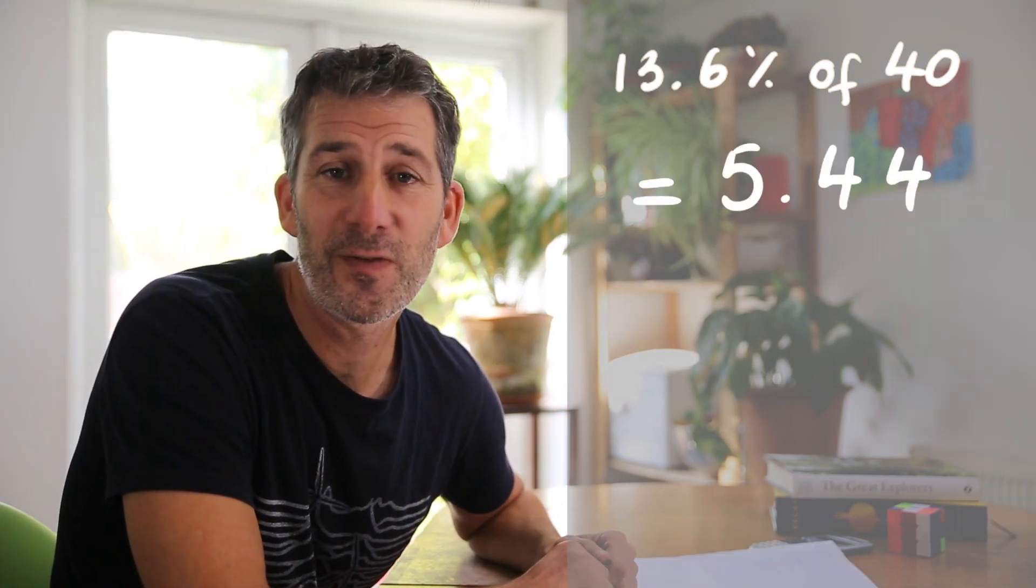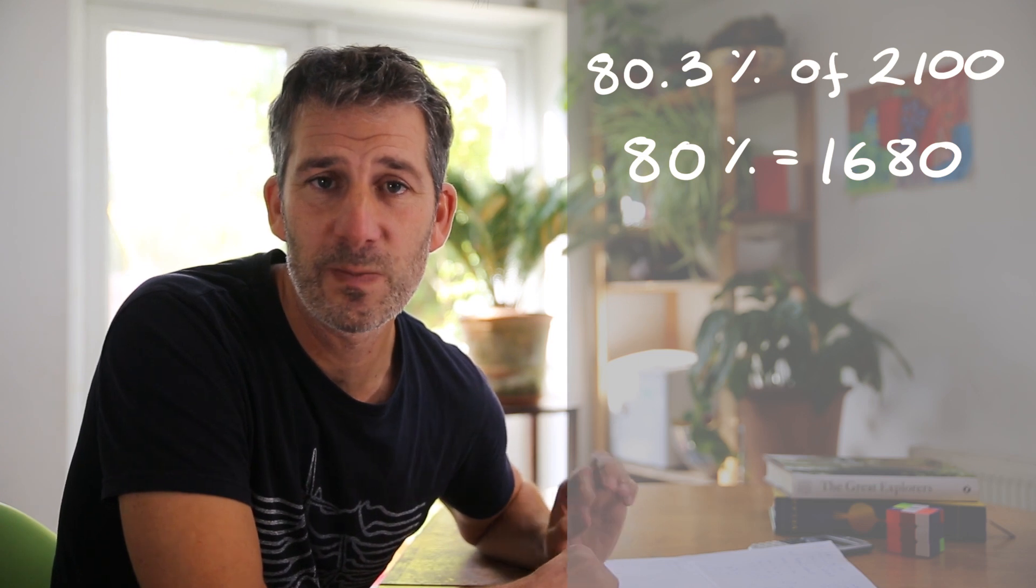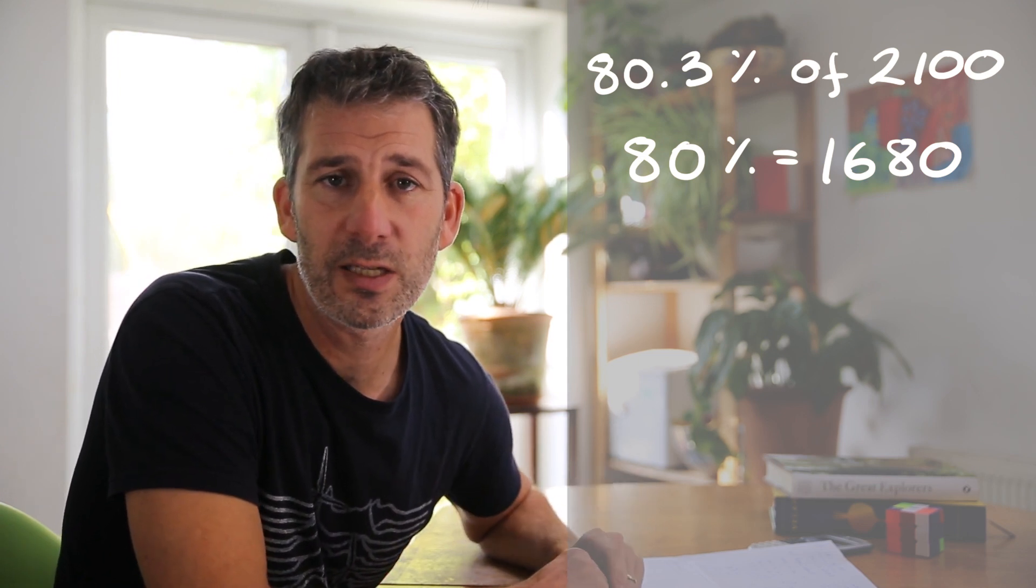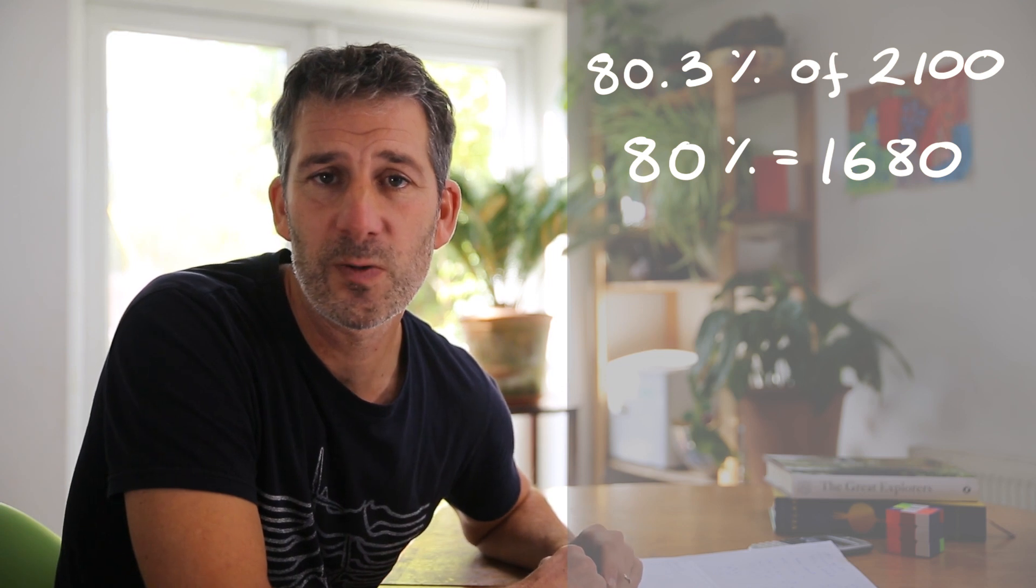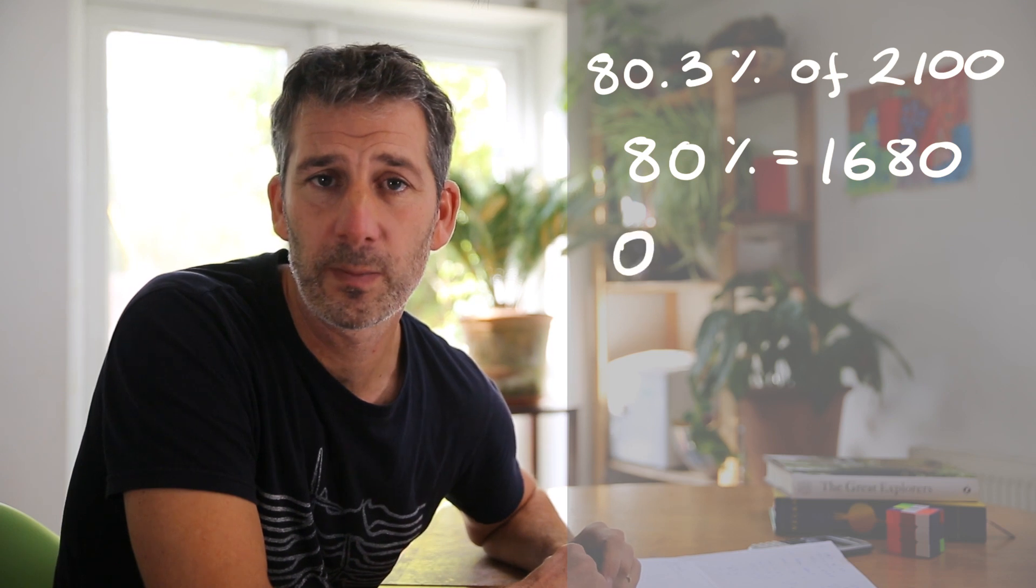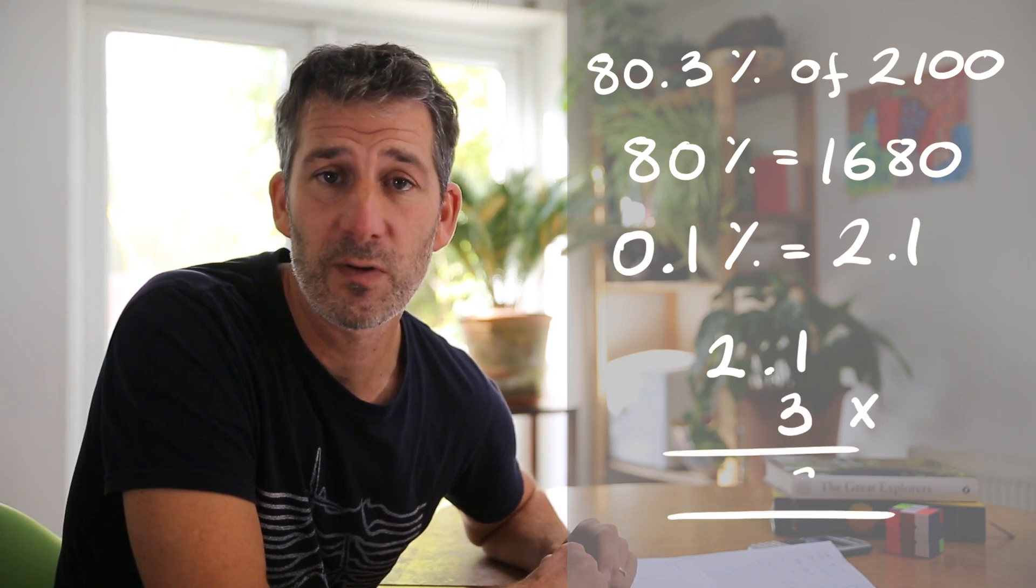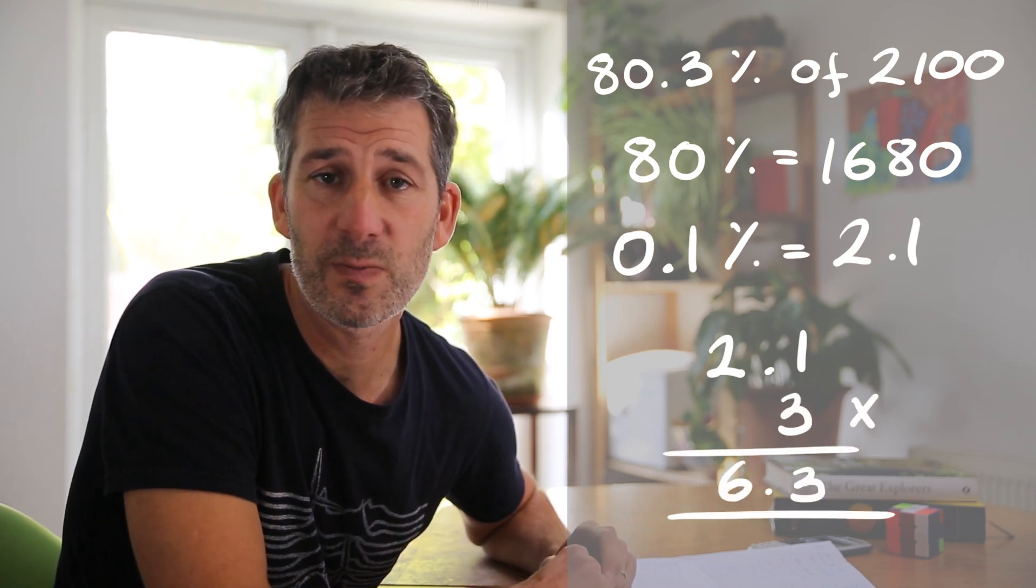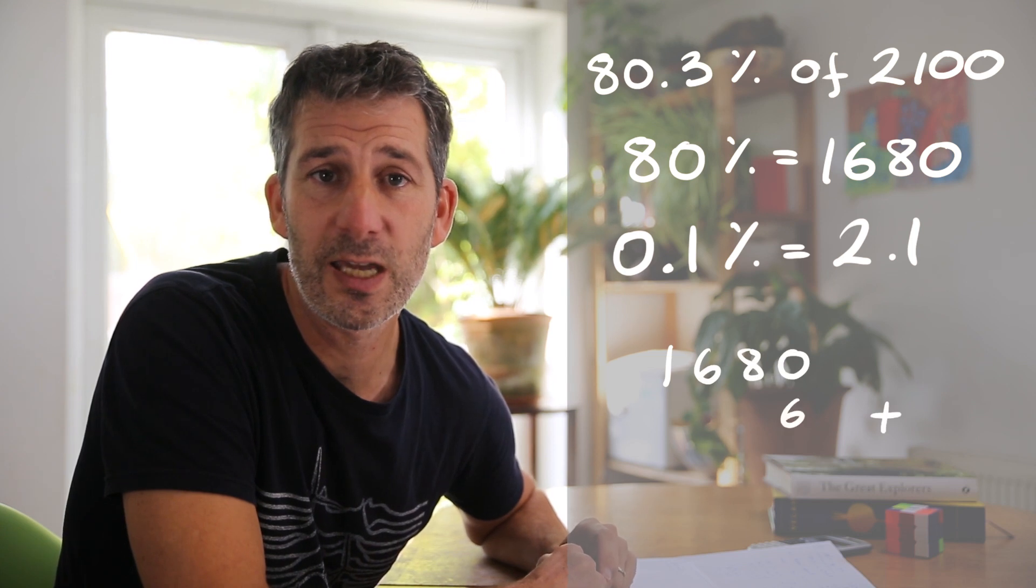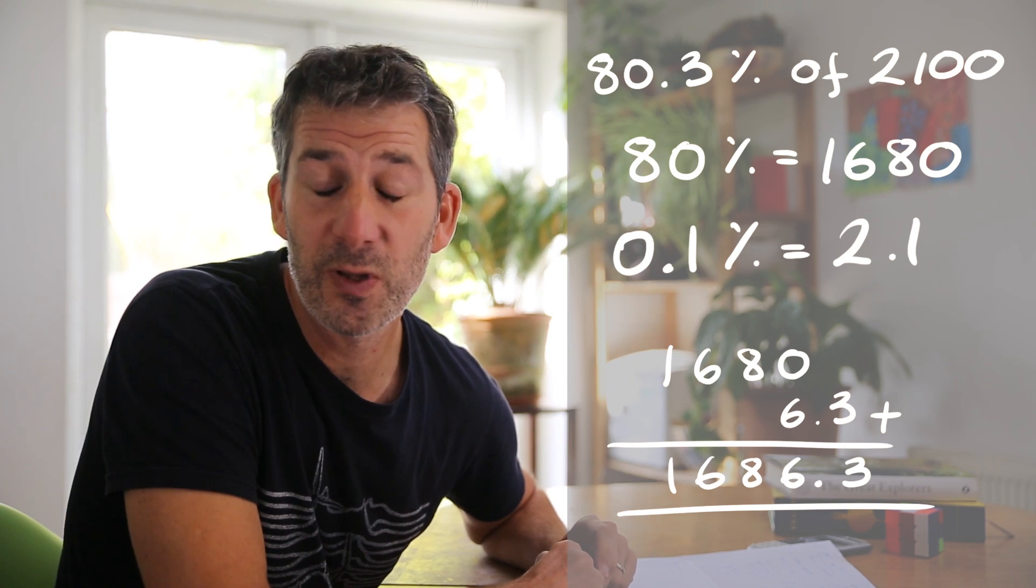And the final question is to find 80.3% of 2100. Well, 80%, that's pretty straightforward to find out. That's 1680. And then we just got to work out this 0.3%. So 1% of 2100 is 21. So 0.1% will be 2.1. And then I need 3 of those to get my 0.3. So 3 lots of 2.1 is 6.3. And I've just got to add that on to my 1680, which gives me a total of 1686.3.